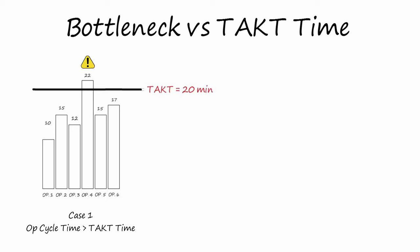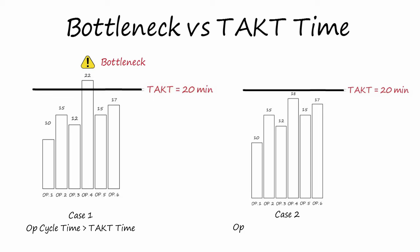22 minutes are higher than takt time, so this will have an impact on customer delivery. In case two, on the other hand, station four is lower than takt time, so it will not impact customer delivery, but will give the pace to the production.